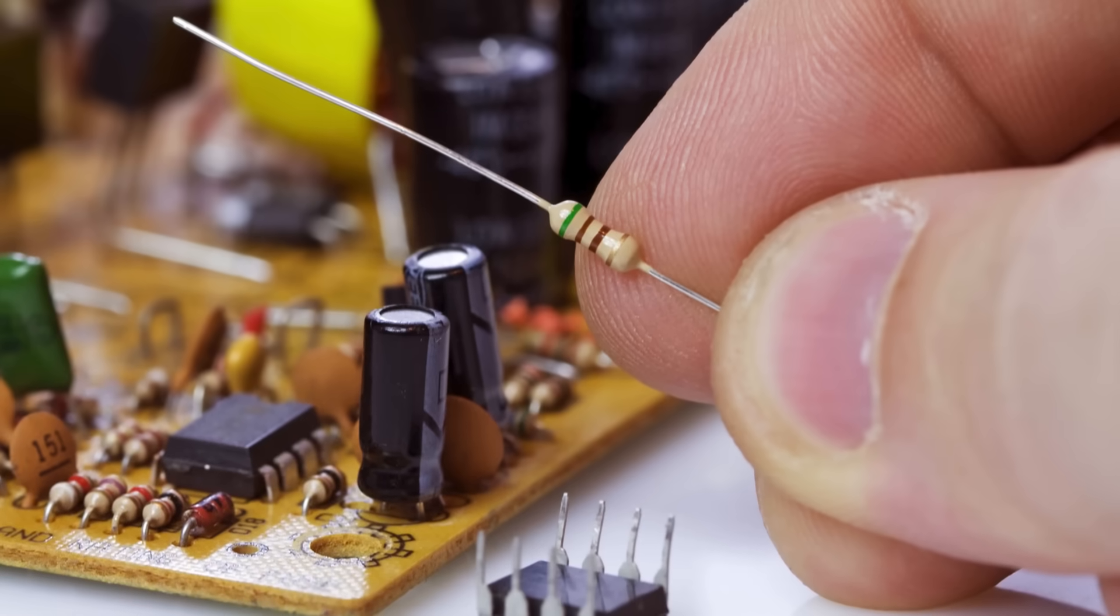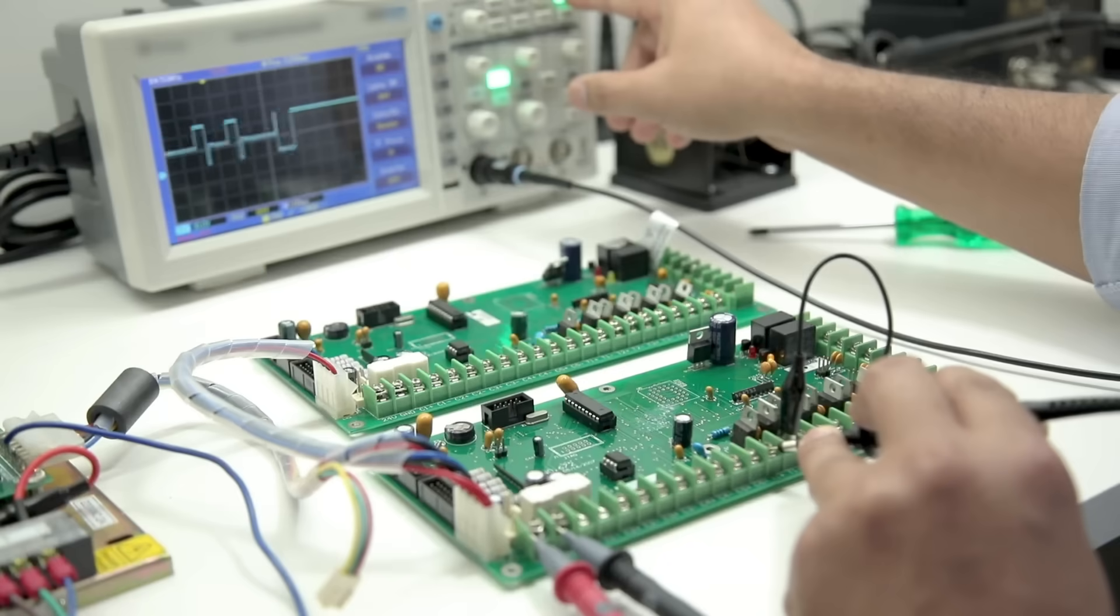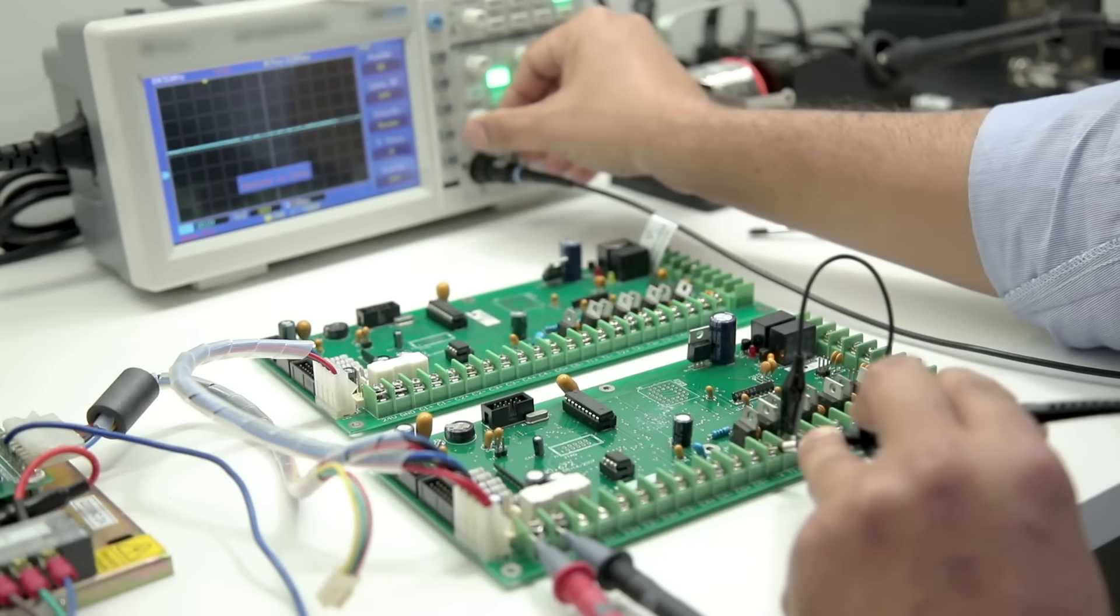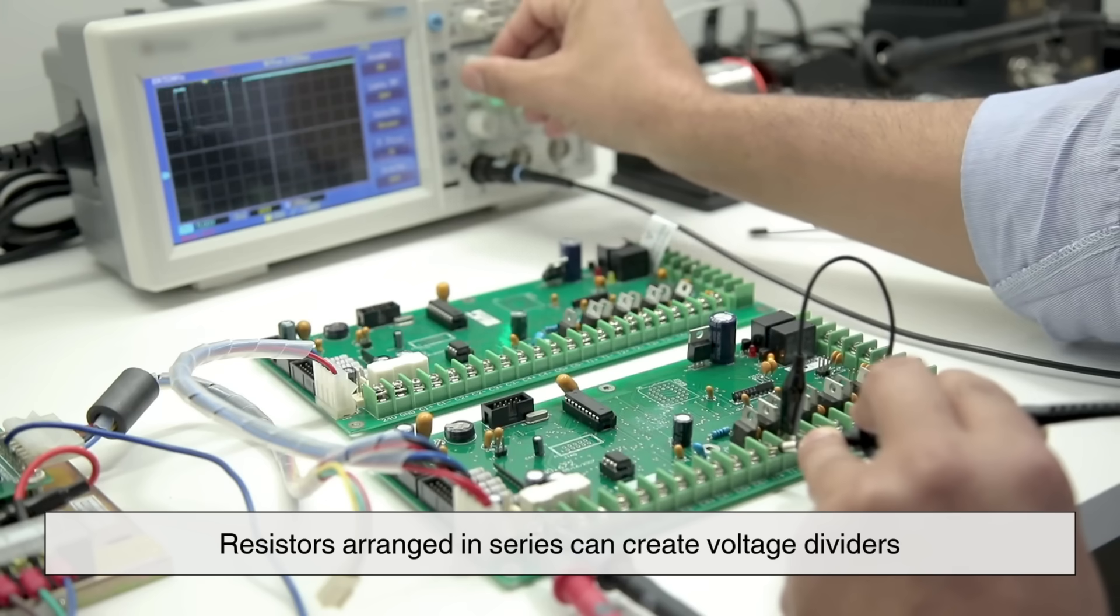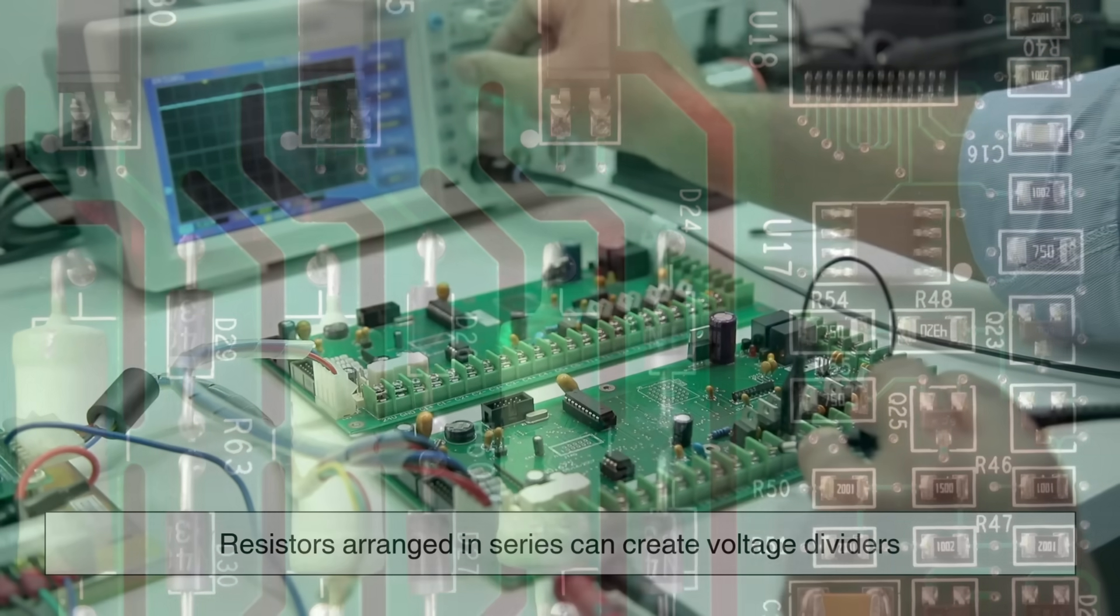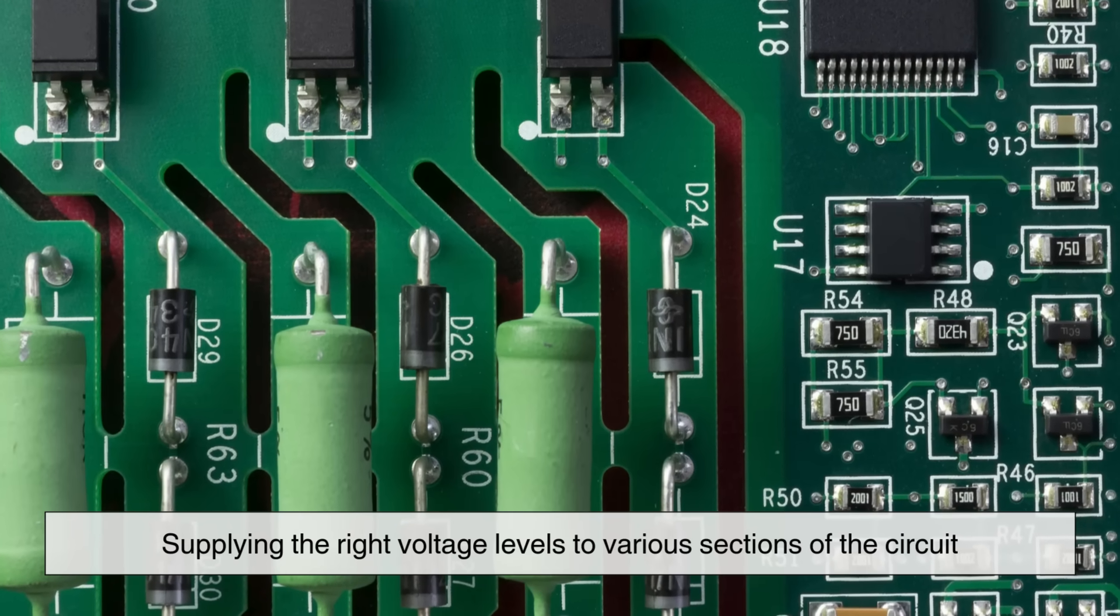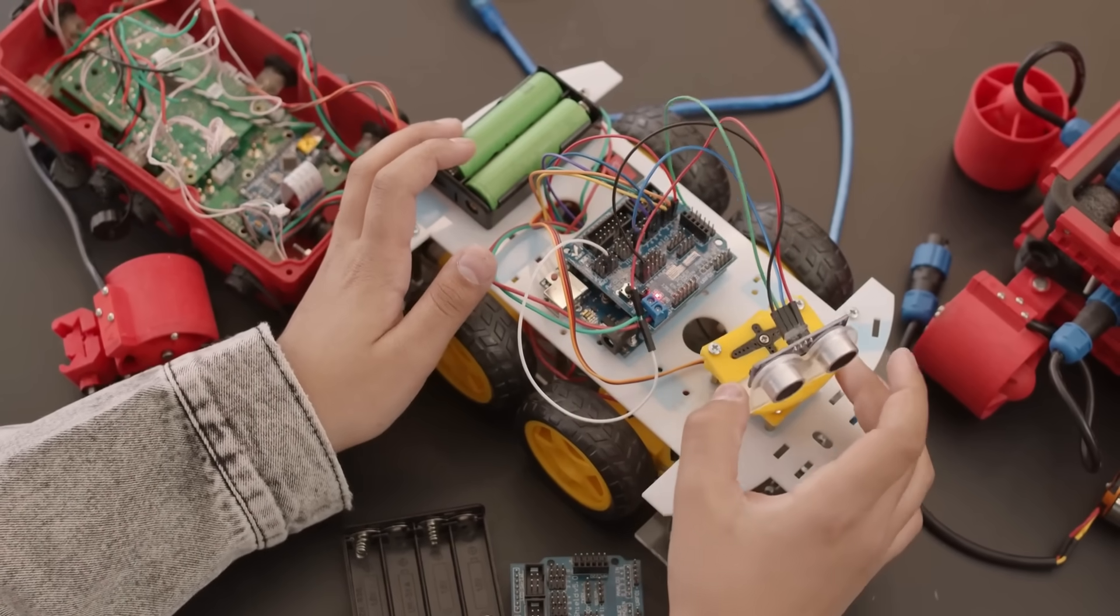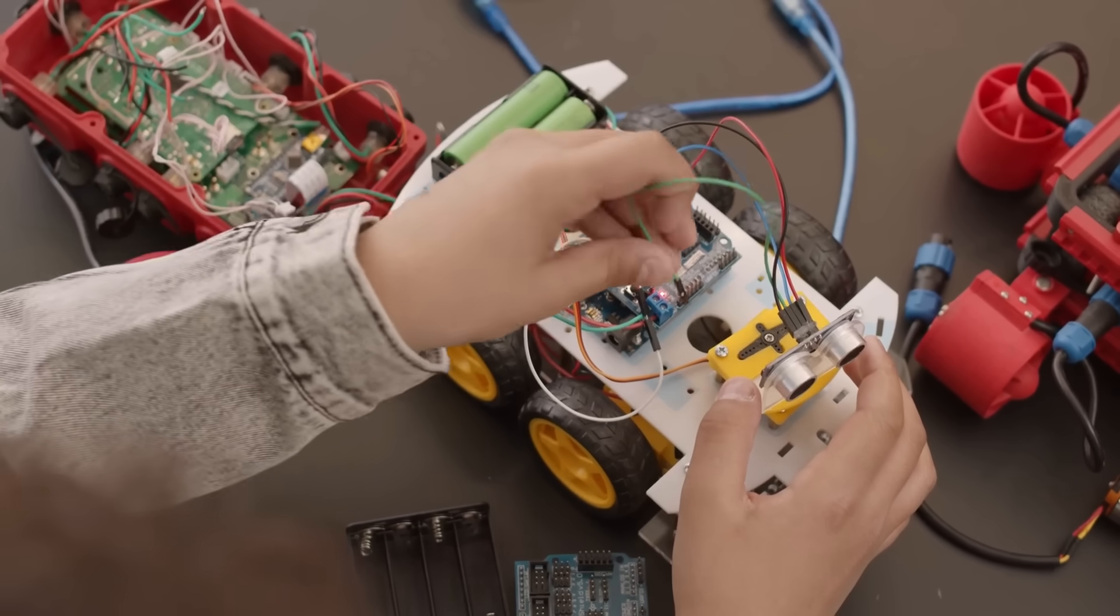Resistors also play a key role in voltage division. In circuits, voltage needs to be distributed appropriately among different components, and resistors arranged in series can create voltage dividers, supplying the right voltage levels to various sections of the circuit. This principle is widely used in sensors, where small electrical signals need to be measured accurately.